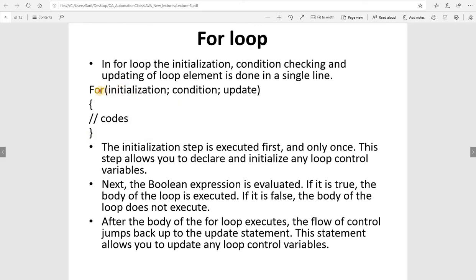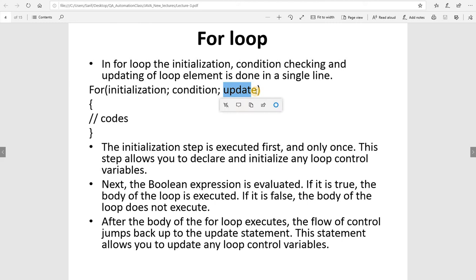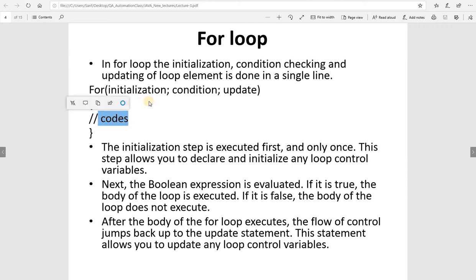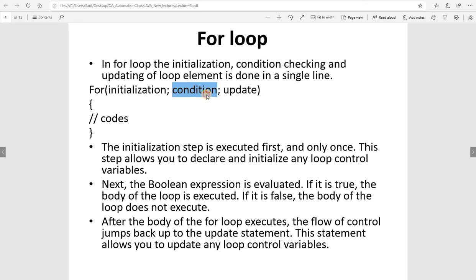Here's how the for loop works: first the initialization executes once, then the condition is checked. If true, the compiler enters the body and executes the code. Then it comes back to the update — increment or decrement — then checks the condition again. It never goes back to initialization after the first time. Every iteration goes: execute body, update, check condition.